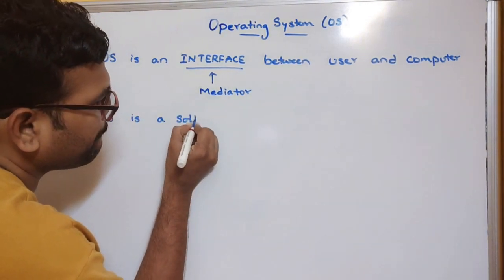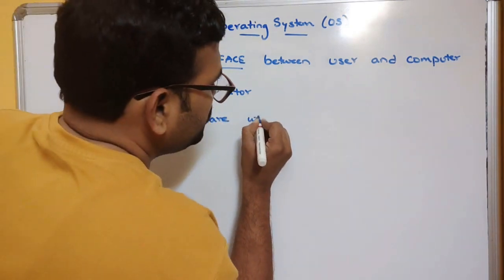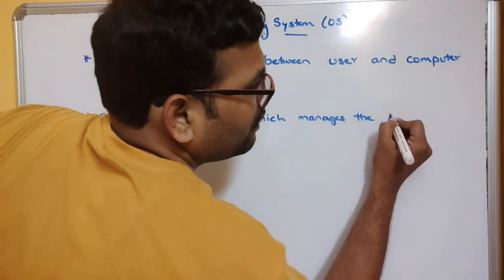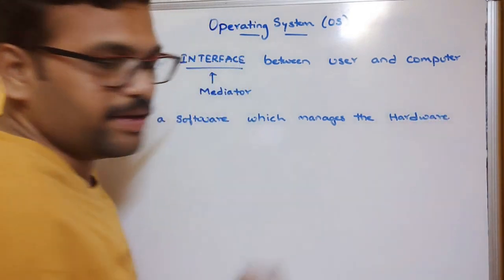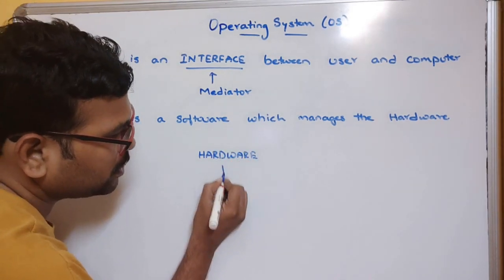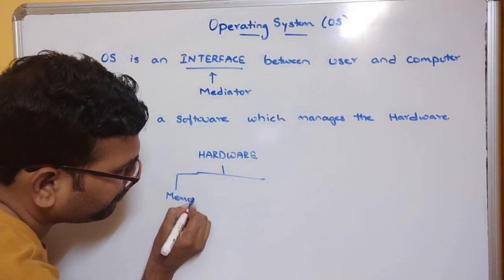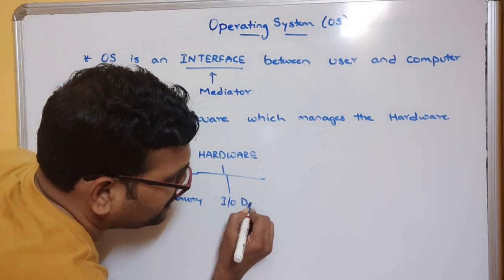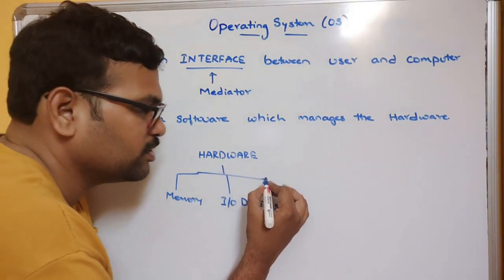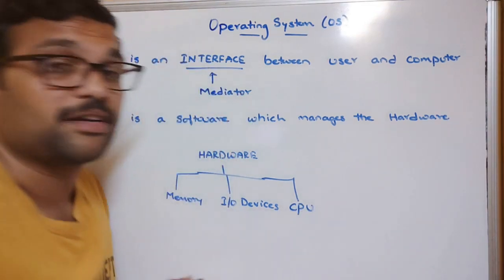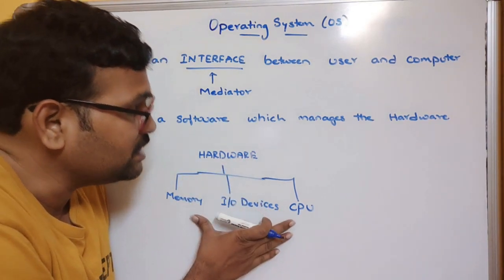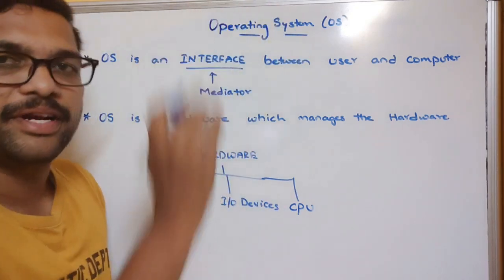The operating system is also a software which manages the hardware. Our computer hardware includes memory, I/O devices, CPU (the processor), and so on. In order to communicate with all these hardware components, we require one software called the operating system.